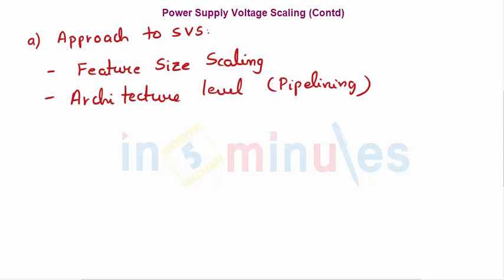The first approach to static voltage scaling is feature size scaling. As technology scales down, the channel length is getting reduced. With technology scaling down, processes are improving — the width, length, supply voltages, and terminal voltages are being scaled down. When VDD is scaled down, dynamic power dissipation will reduce. However, feature size scaling also reduces the threshold voltage, and when that is reduced, the subthreshold current increases exponentially.